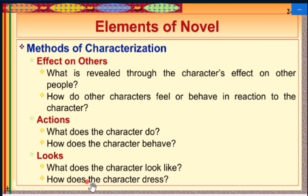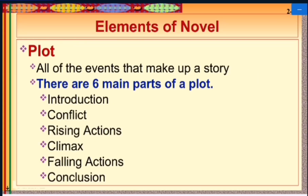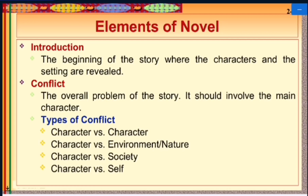The next element is plot — all the events that make up a story. There are six main parts of plot: introduction, conflict, rising actions, climax, falling actions, and conclusion. These are the major components of plot, which is a key element of a novel.